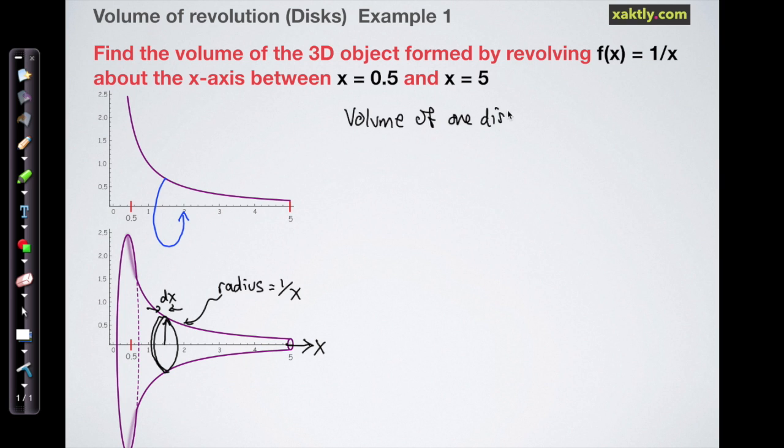So the volume of one disk is just pi r squared times the height of the disk. And then just a little bookkeeping shows us that r is 1 over x, so r squared is 1 over x squared. h is just dx, the thickness of each disk.